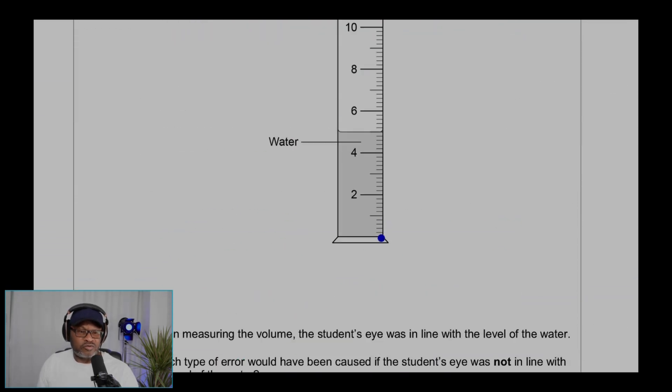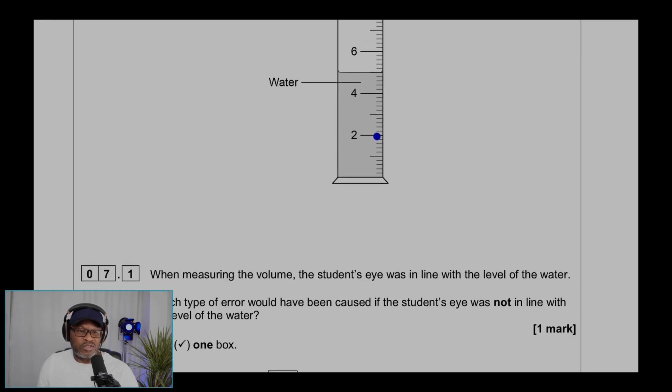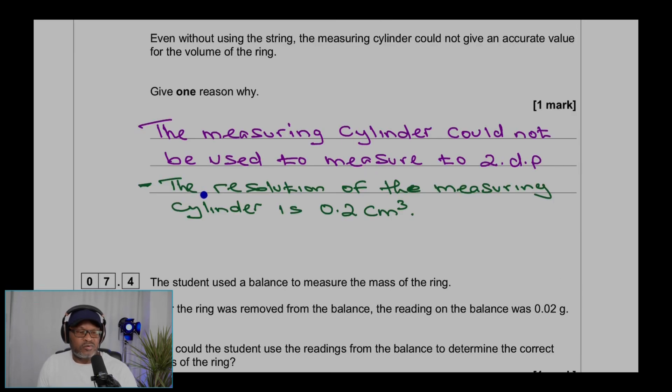If you look at the measuring cylinder, it can only measure to one decimal place, not two. This is three, so that would be 2.2, 2.4, 2.6, 2.8, 3. And also you can say the resolution of the measuring cylinder is 0.2 centimeter cube, because each little line is 0.2. That gives the resolution, which is only one decimal place, not two decimal places as we are saying here.